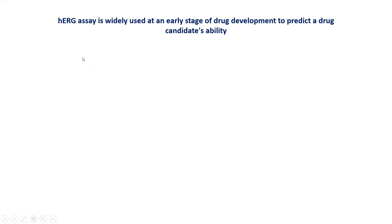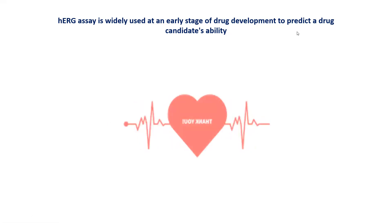These are the introductory aspects of HERG. HERG assays are widely used at an early stage of drug development to predict a drug candidate's ability to produce cardiotoxicity. The assays are divided into three parts: in vitro assay, ex vivo assay, and in vivo assay. In the next presentation we will discuss in detail what the different assays are and how they are performed to identify HERG expression. If you like this video, please subscribe, like, and share with your friends. Thank you for watching.